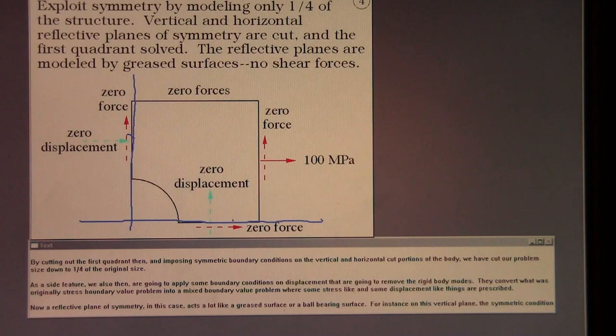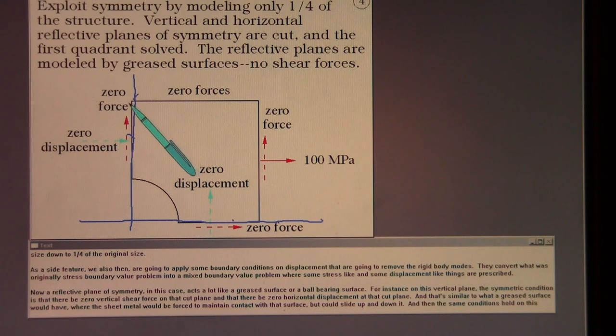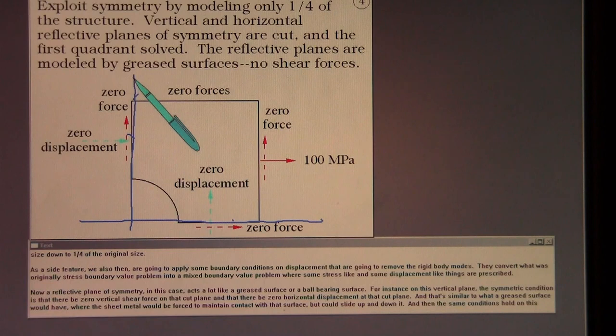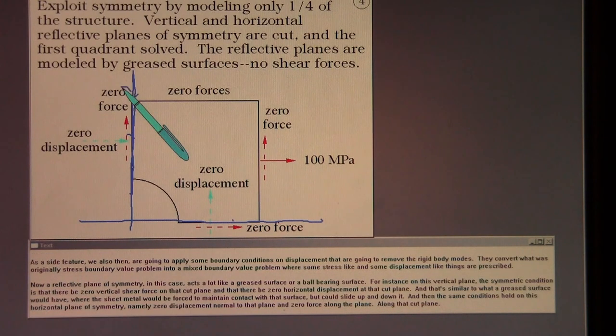As a side feature, we also then are going to apply some boundary conditions on displacement that are going to remove the rigid body modes. They convert what was originally a stress boundary value problem into a mixed boundary value problem where some stress-like and some displacement-like things are prescribed. Now a reflective plane of symmetry in this case acts a lot like a greased surface or a ball bearing surface. For instance, on this vertical plane, the symmetric condition is that there be zero vertical shear force on that cut plane and that there be zero horizontal displacement at that cut plane.